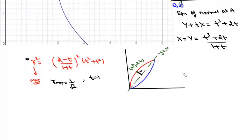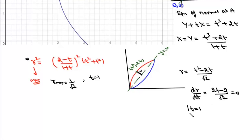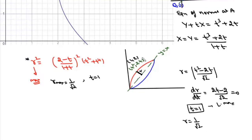Differentiating r = (t² − 2t)/√2 with respect to t and setting it to zero gives (2t − 2)/√2 = 0, so t = 1. Checking confirms a local maximum at t = 1, giving r = 1/√2. With t = 1, point A is (1, 2). The center of the circle is ((1³ + 2·1)/(1+1), (1³ + 2·1)/(1+1)) = (3/2, 3/2).